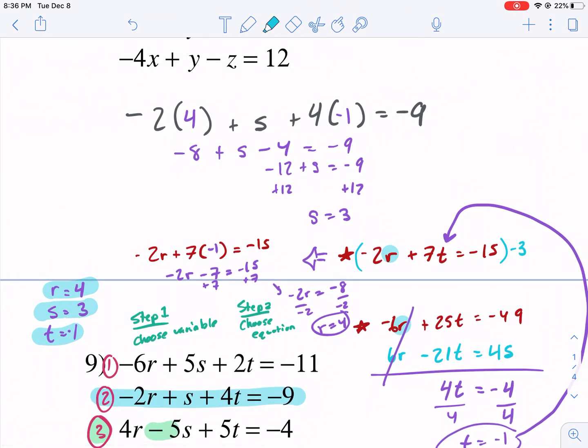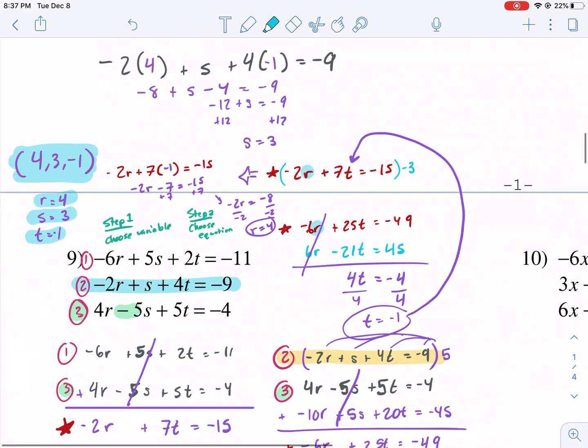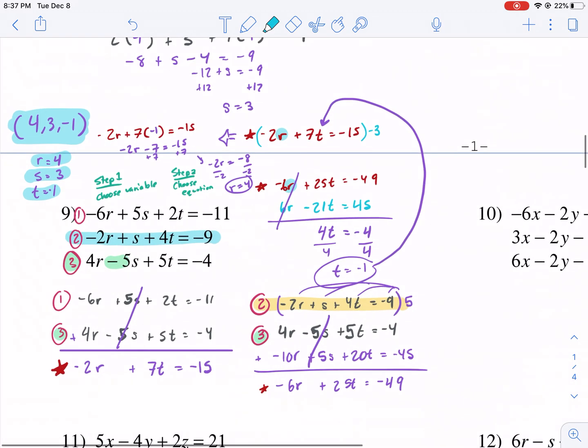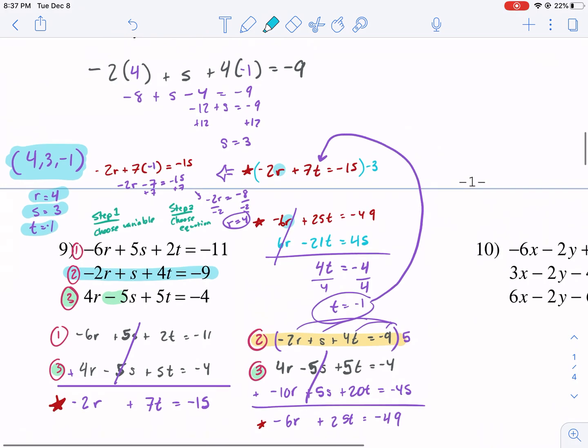You should write it as an ordered triple four comma three comma negative one, because it represents a location. So there you have it. There's one more problem that's a little bit more difficult. Hope you enjoyed this video. Thanks for watching. I look forward to seeing you in my next video. Bye.